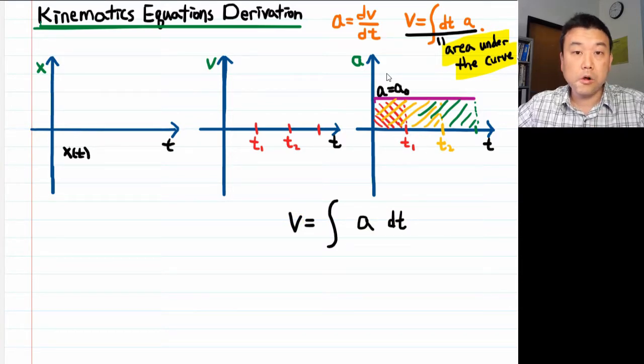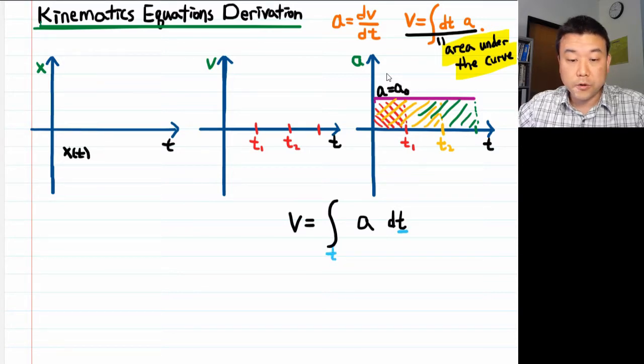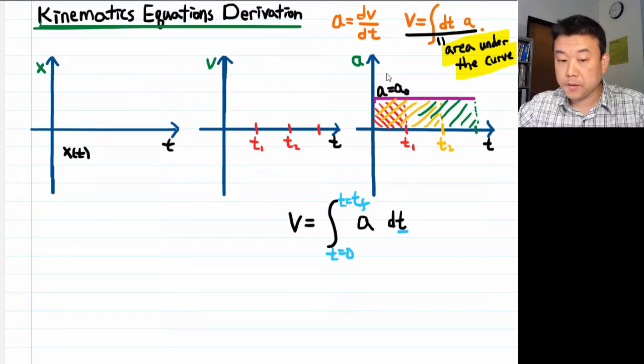In physics, almost all the integrations we do are done as definite integrals. So instead of leaving loose ends hanging, I am going to specify what my integration limits are. The integration with respect to time t, that's my x-axis here. It's going to go from t equals 0 to the final time is, oh, I need to make sure I don't use the same letter. Let me just call this t sub f. And I'll replace that with a t later on.